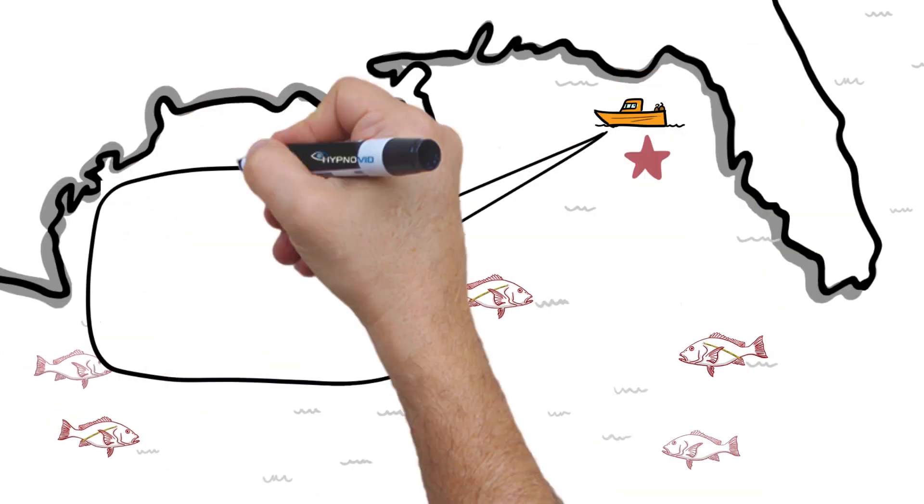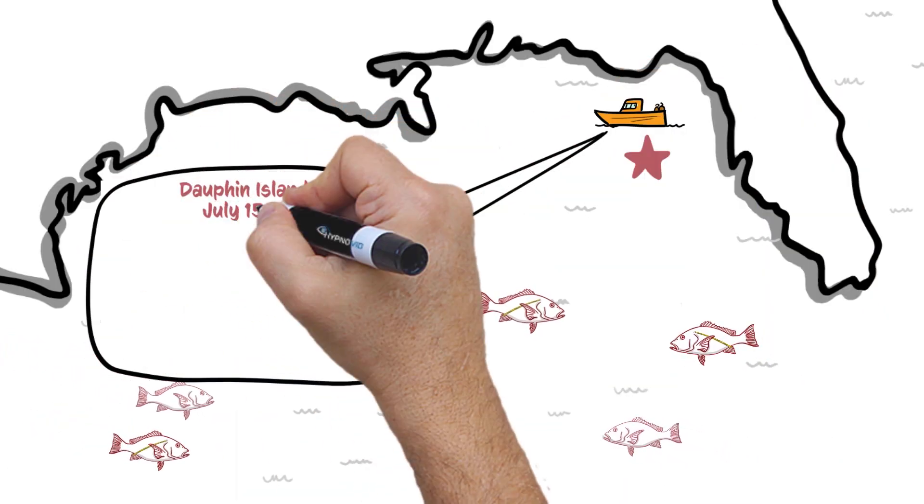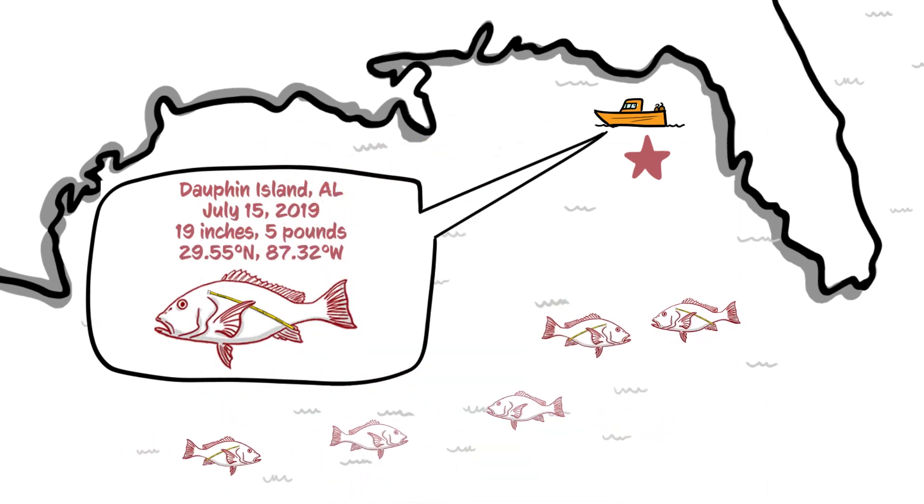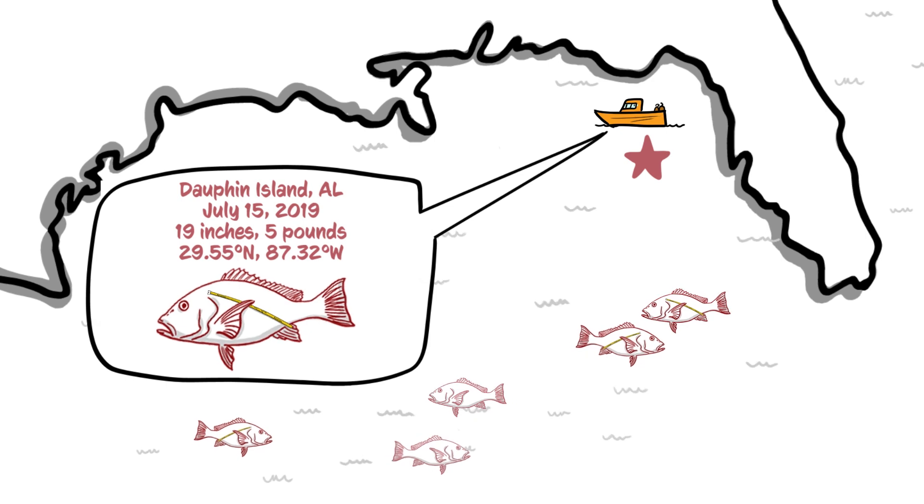Upon catching a tagged red snapper, fishers should record the fishing port from which they departed, the date, the fish's length and weight, and the latitude and longitude where the fish was caught.